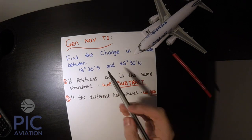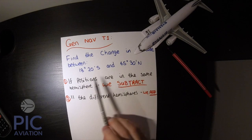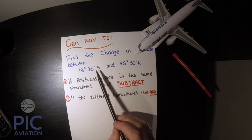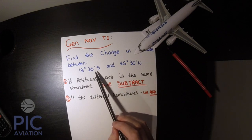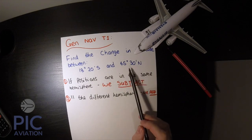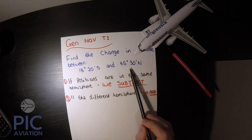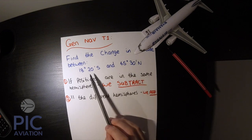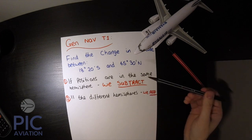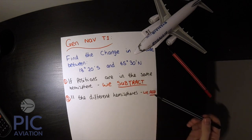Back to our question — we have these two positions. We now realise that we have one in the southern hemisphere and one in the northern hemisphere. Because of this, we look at our rules: they are in different hemispheres, and therefore we are going to add them together.